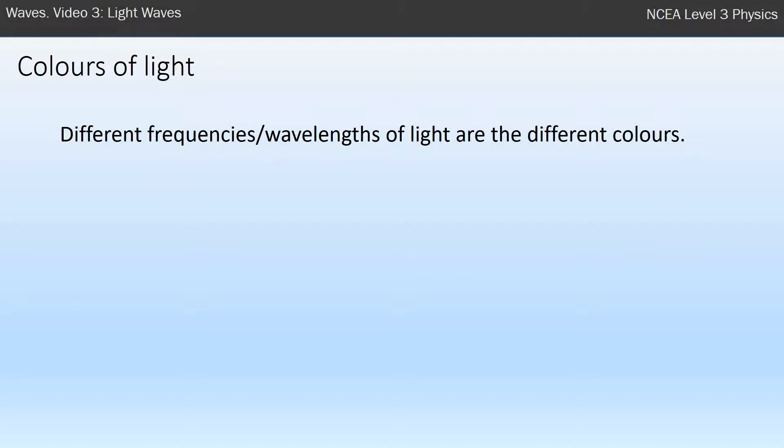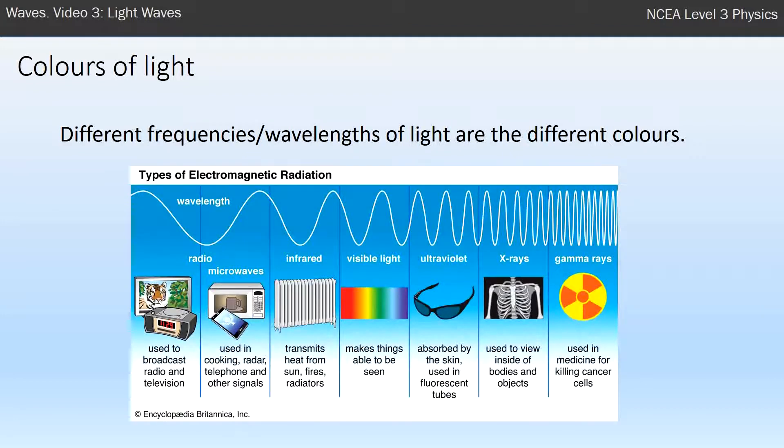Now, the colors of light that we're used to seeing, reds and greens and blues, they are actually just different frequencies or different wavelengths of light. So that's what makes up the colors.